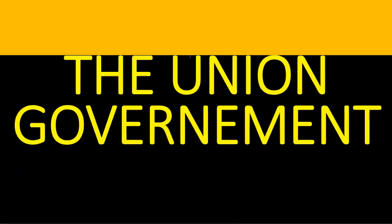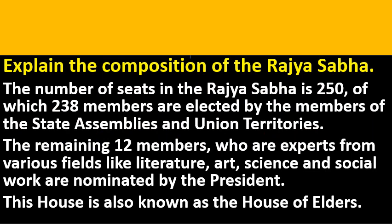Next lesson: The Union Government. Explain the composition of the Rajya Sabha. There are 250 members in the Rajya Sabha — 238 are elected by members of state assemblies and union territories, while 12 members are nominated by the President of India from those who have served in the fields of literature, art, science and social service.